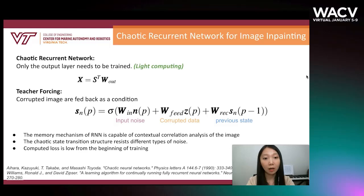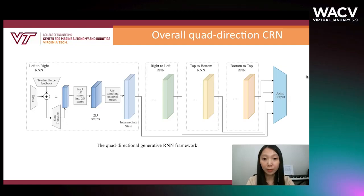We further propose a quadirectional CRN as shown in the figure above. It is composed of four decoupled CRNs which respectively scan the image in four directions. The solid line represents the forward path of the proposed network, and the dashed line separates the four independent generative RNNs. The joint output layer is a fully connected layer that takes the concatenation of the output from four generative RNNs to produce the restored image.